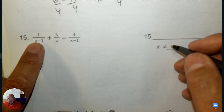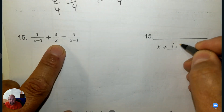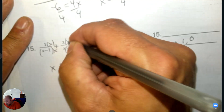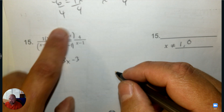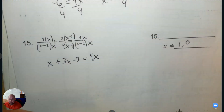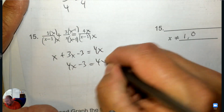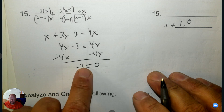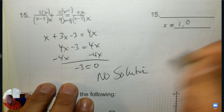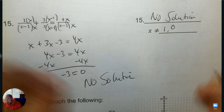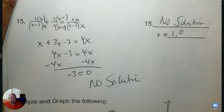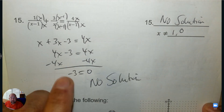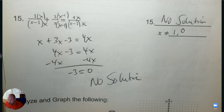Write down what x cannot be — press pause and try first. It's positive 1 and 0. To solve, multiply by x and by (x minus 1) — distribute: 3x and negative 3. Multiply the last one by x. When we try to solve, all the x's eliminate and you're left with negative 3 equals 0 — that's not true, so there is no solution. If all the x's eliminate and the two numbers don't equal each other, there's no solution. But if both numbers equal each other, it would be all real numbers.